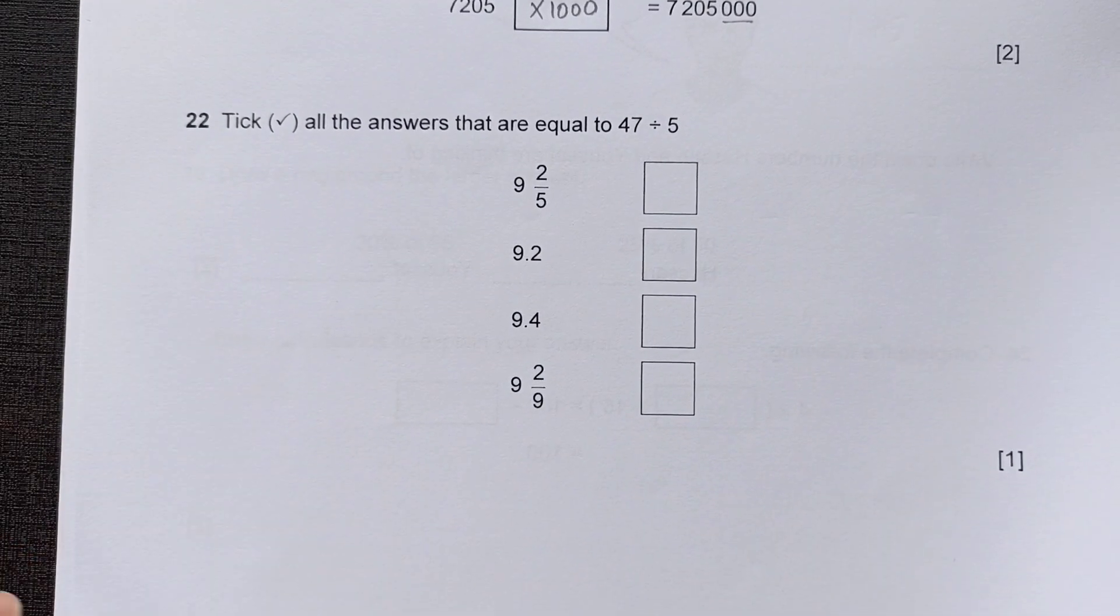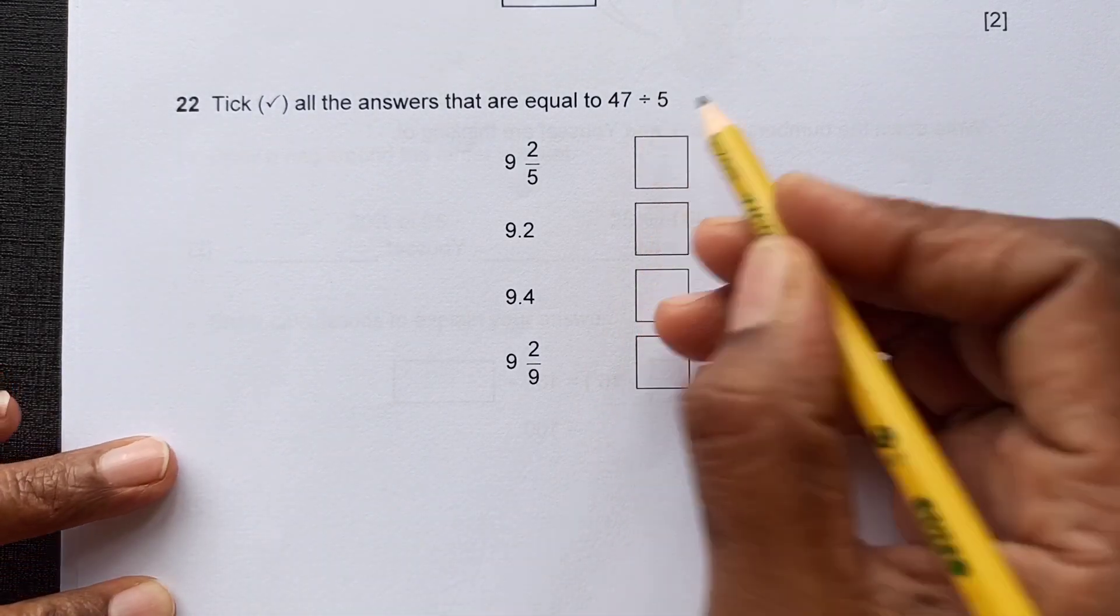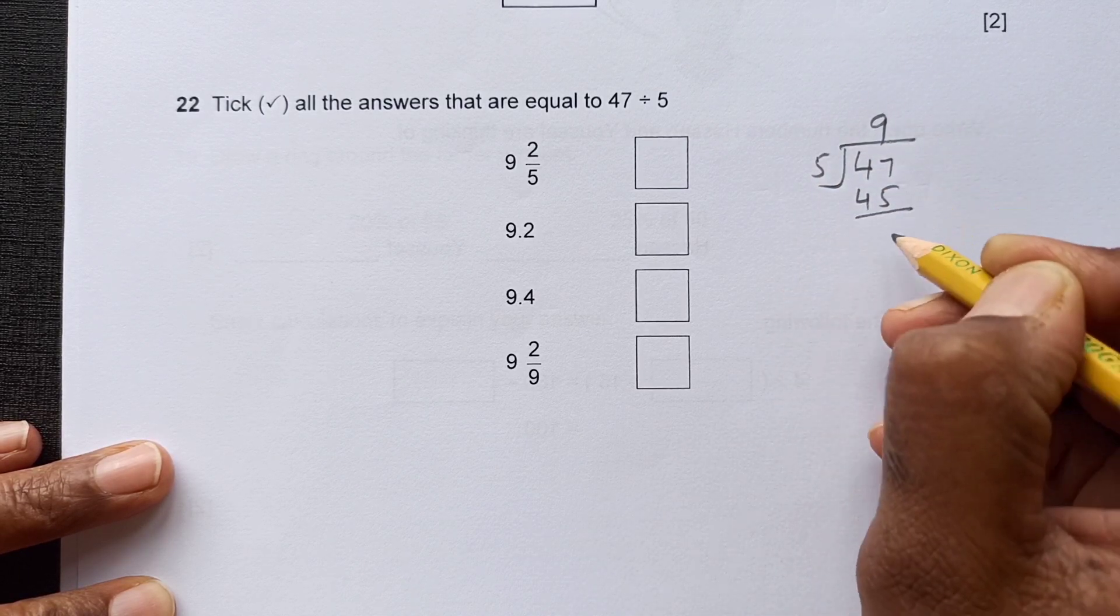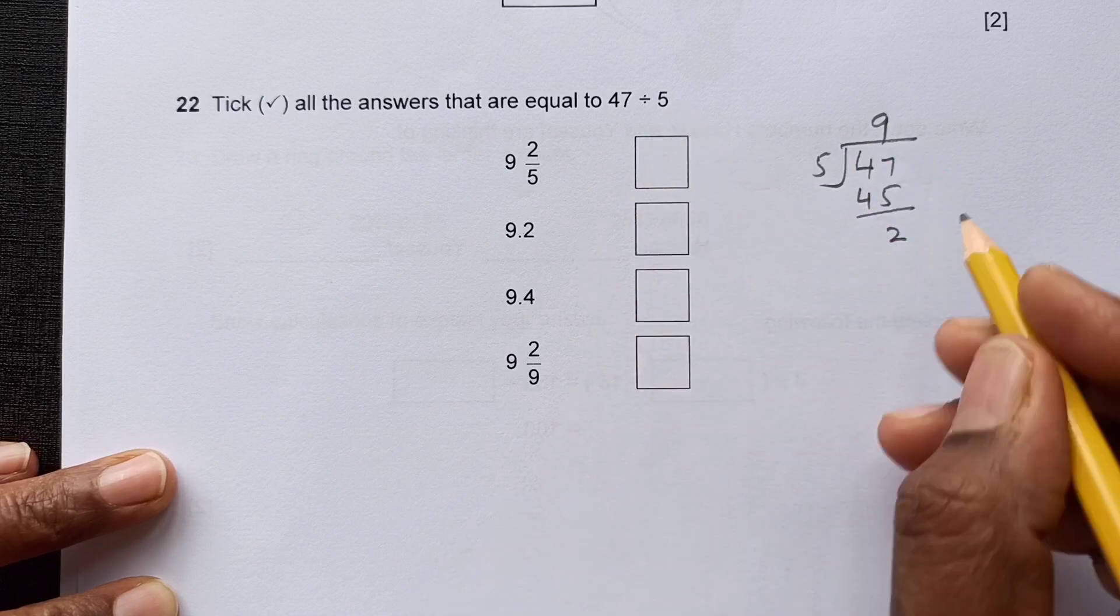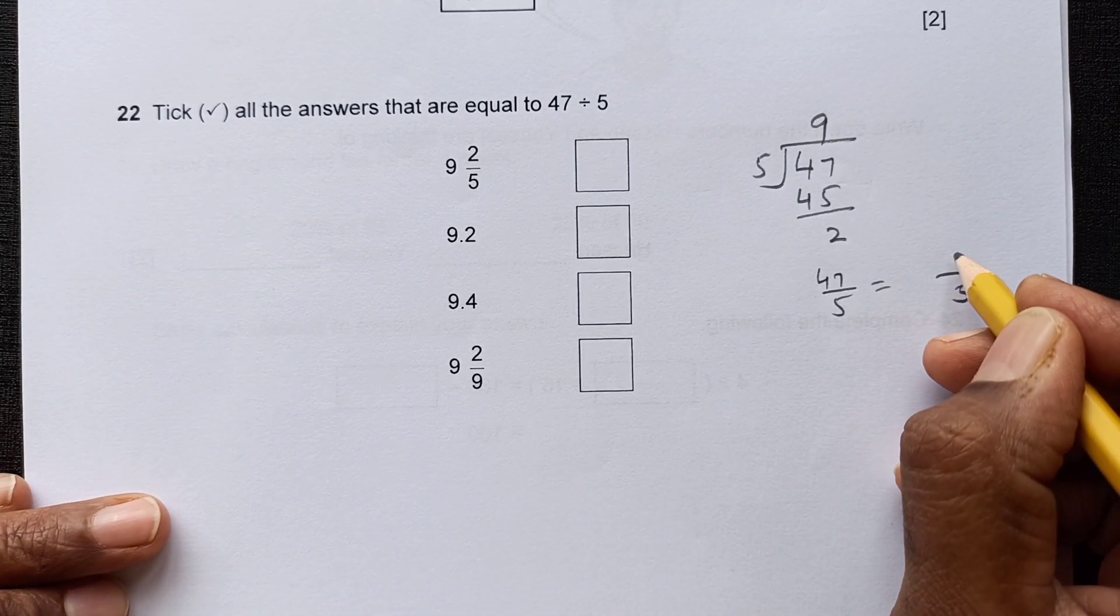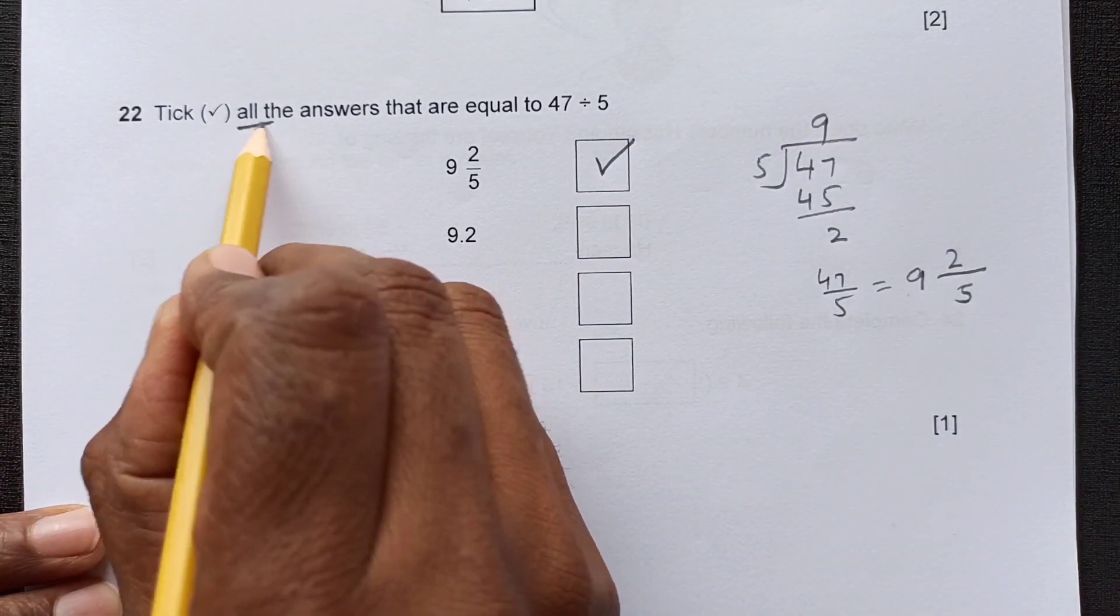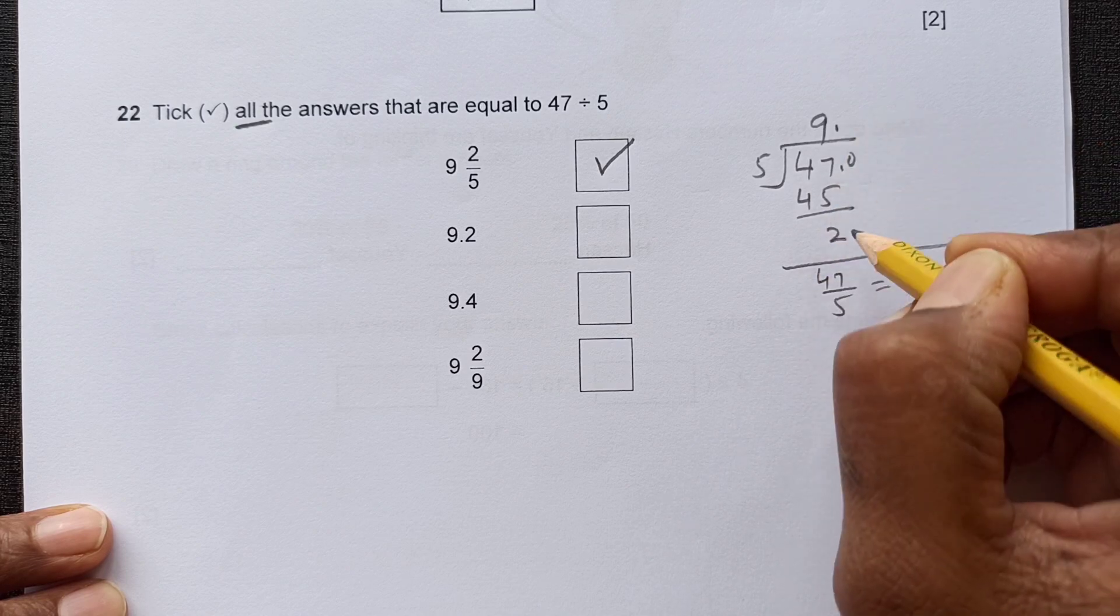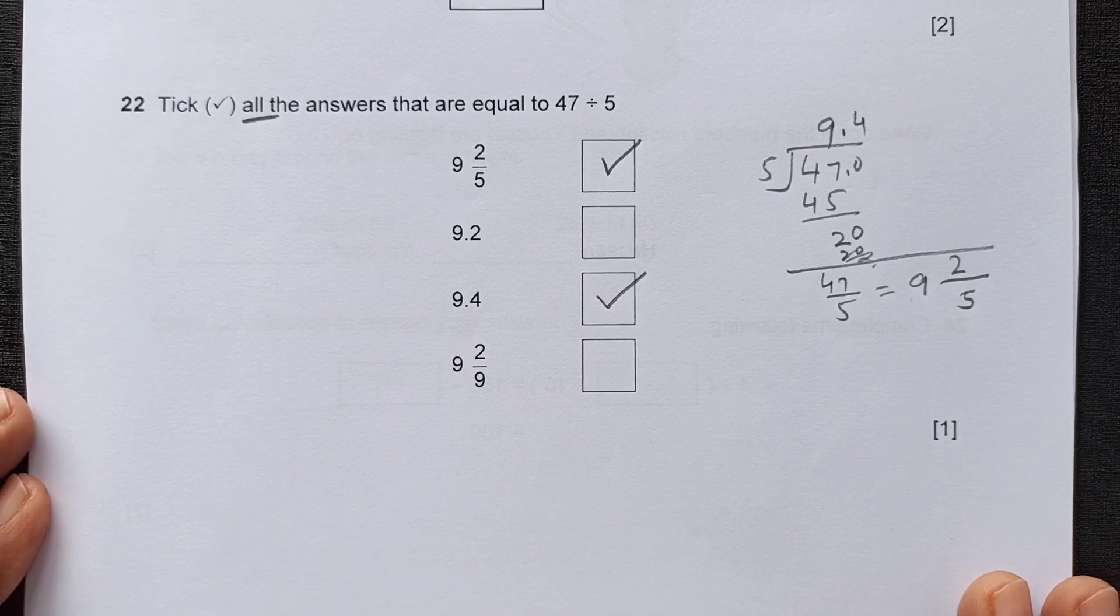Let's move to the next question. Number 22. Tick all the answers that are equal to 47 divided by 5. So let's divide 47 by 5. 5 times 9 is 45, so remainder 2. We have fractions also, we have decimals also. So how to write this down? 47 divided by 5 can be written as 5 will come here, and the remainder goes up there, so 9 and 2/5. So we have this answer here. We can tick. He said tick all the answers, so there may be another answer. If we continue this division by adding a decimal here, it will be 0. 5 times 4 is 20, so 9.4. So we have these two answers for this question.